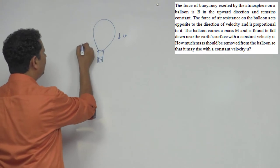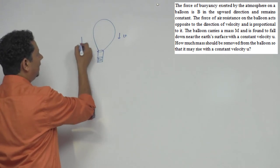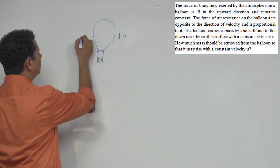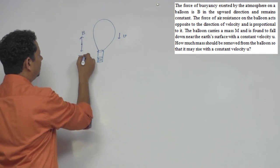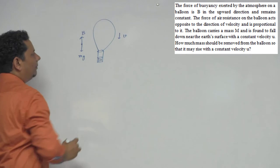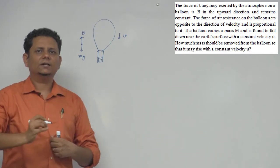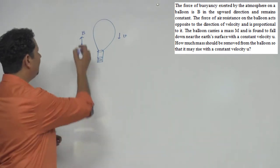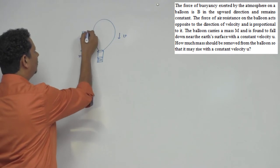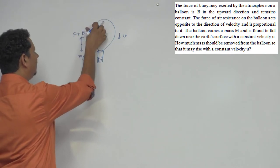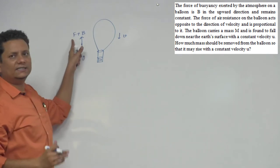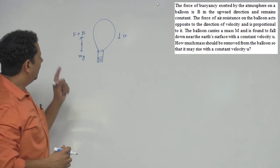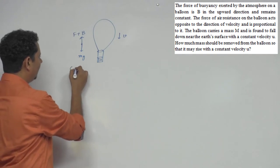When we make the FBD, the forces acting upward are buoyancy force B, and downward is mg force. Also there is air resistance force which acts opposite to the direction of motion. So here the air resistance force f is also in the upward direction. Now in this case when we write the equation, this is Case 1.